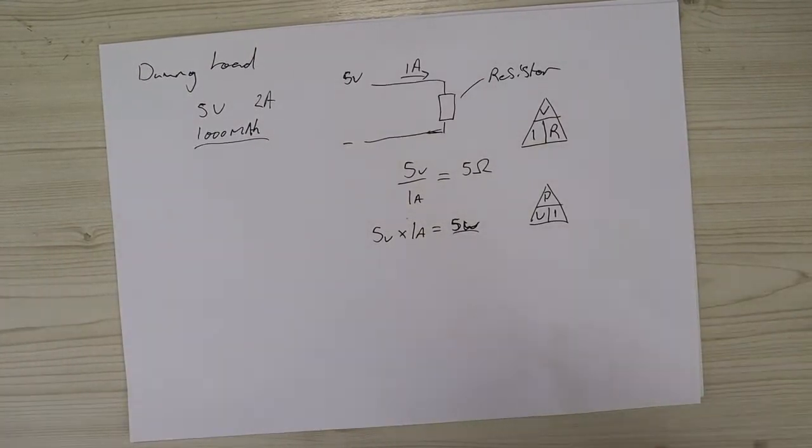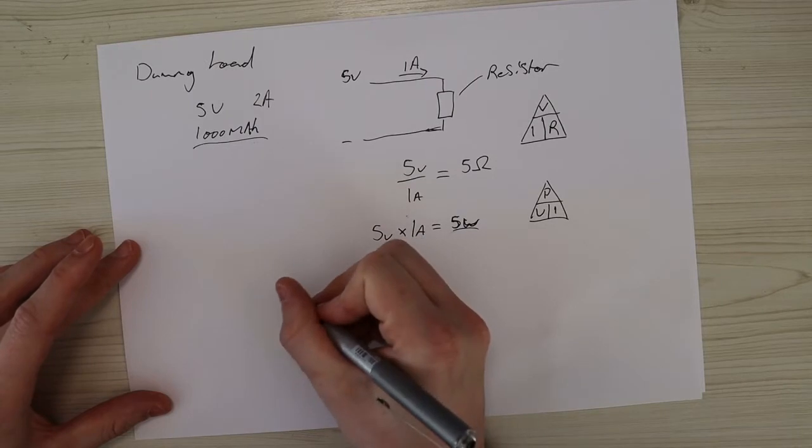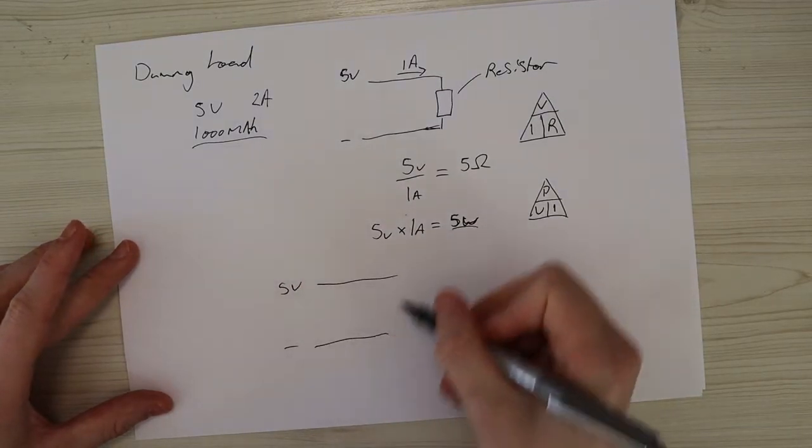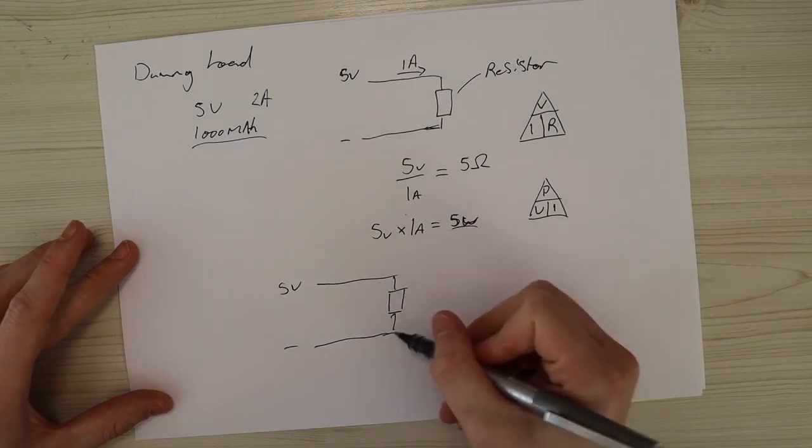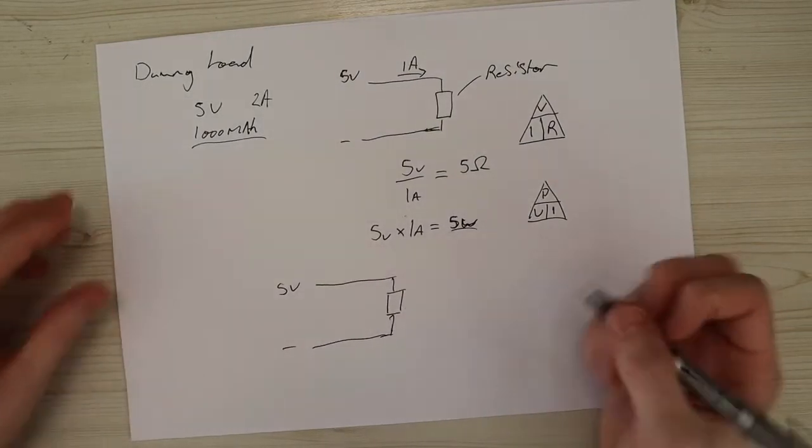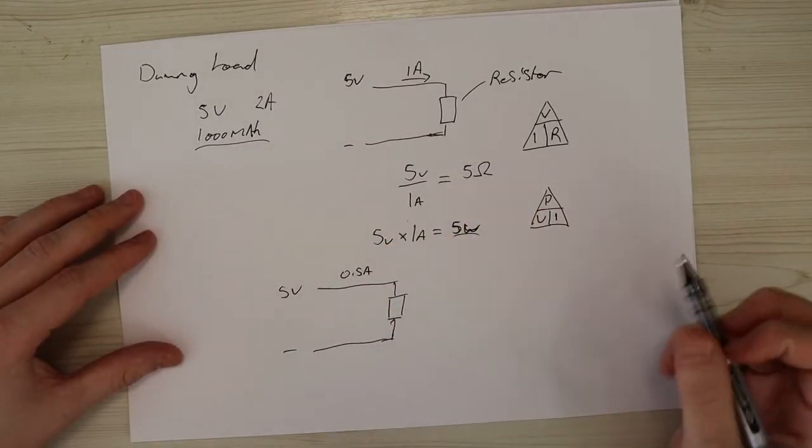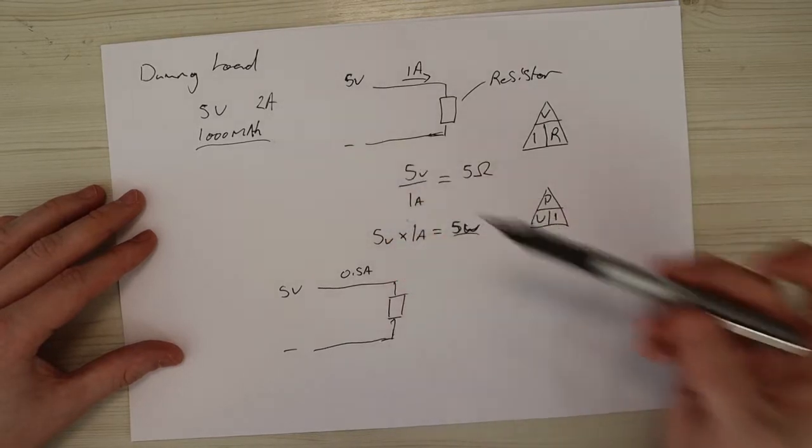So let's go over another example. This is one that I'm actually using myself. So we've got our 5 volts power supply coming in. We've got our resistor. And I'm drawing 0.5 amps, so 500 milliamps. Based on this, the battery pack over here would last 2 hours.